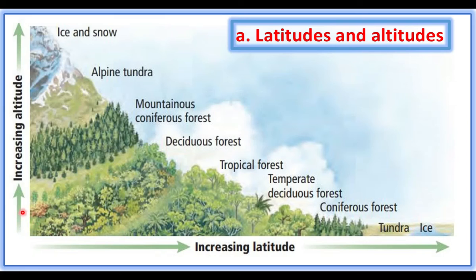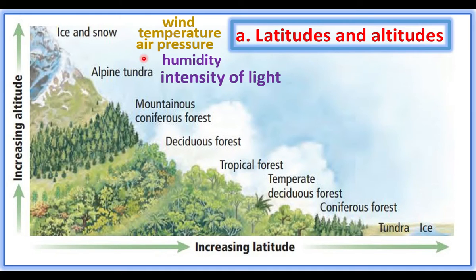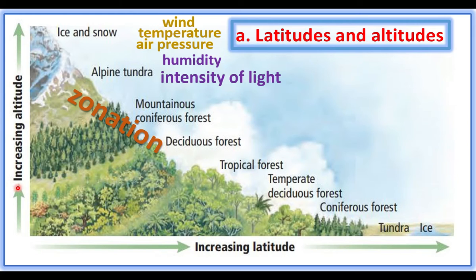Altitude is the height from sea level. At high altitudes there is poor wind, low temperature, low air pressure, but high humidity and high intensity of light. Wind, temperature, and air pressure are low at high altitudes but high in lower regions, while humidity and light intensity are high at altitude. Because of these factors, there are different zones of vegetation at different altitudes.